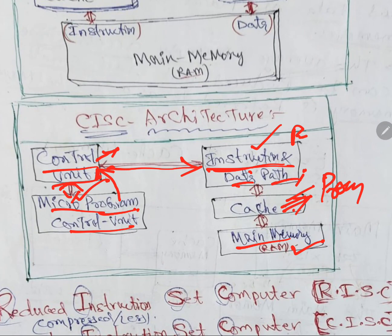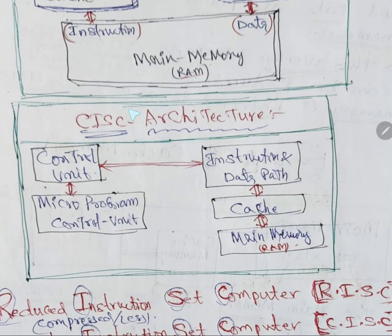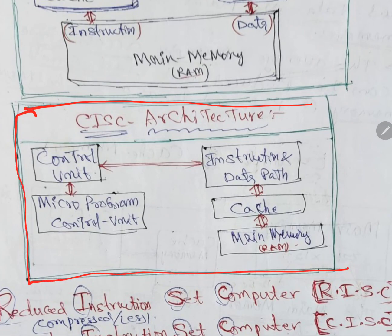Cache memory is bigger than a register and is used to increase the speed of the computer. This is CISC architecture. Draw a double borderline around it — it will be eye-catching. These are writing tips to get good marks: use black pen and blue pen — two black pens and two blue pens.